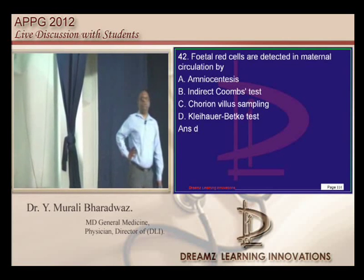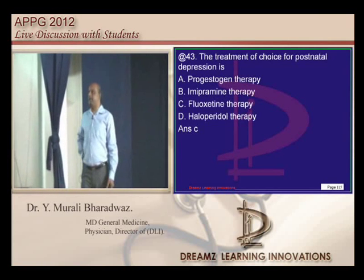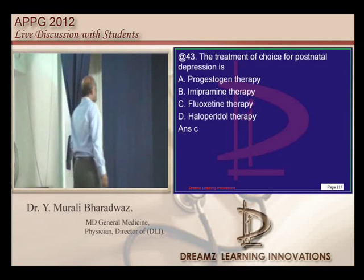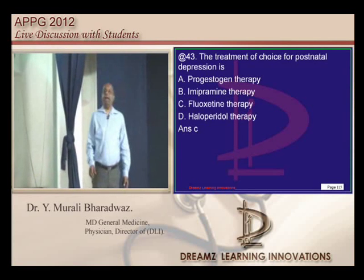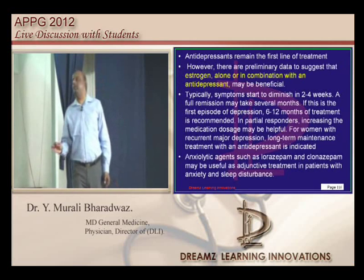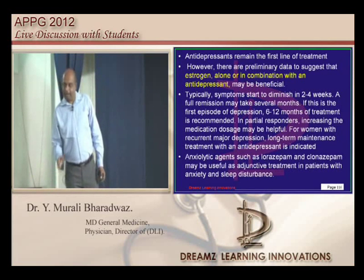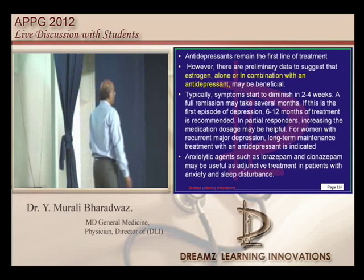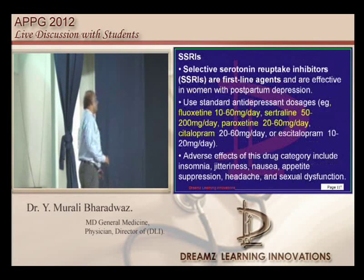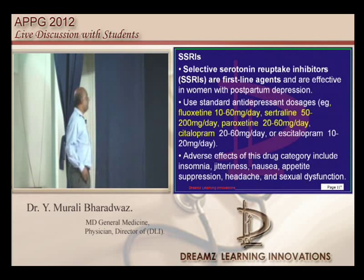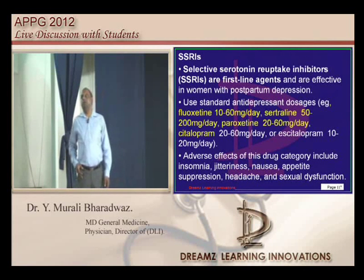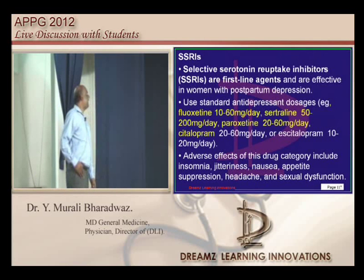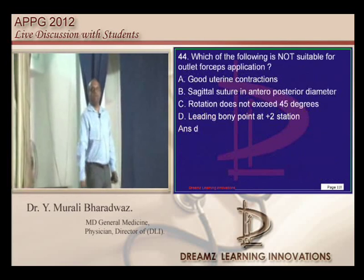How do you treat postnatal depression? What is the drug of choice? Anti-depressants are the first-line treatment for postpartum depression. Among the anti-depressants, SSRIs — which include fluoxetine, sertraline, paroxetine, and citalopram — are considered the drugs of choice for treatment of postnatal depression.